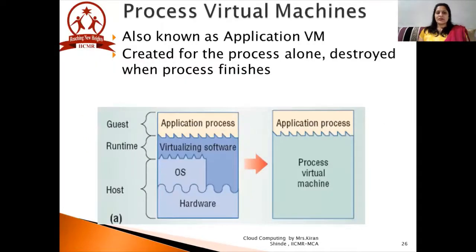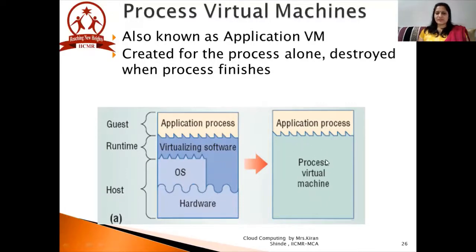Here you can see the PVM image, which is also called an application virtual machine. It is created for the process alone and destroyed when the process finishes. You can see the various layers from the bottom: hardware, operating system, virtualizing software, and the application process. All three lower entities — hardware, operating system, and virtualizing software — are abstracted and combined in one PVM. So the process virtual machine essentially offers you all these things, and on top of it, you can execute your application or process.